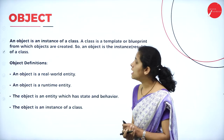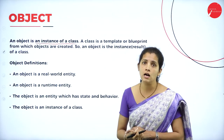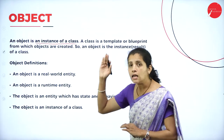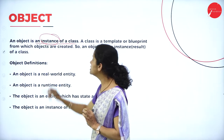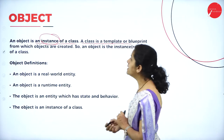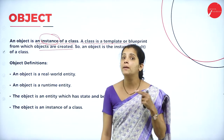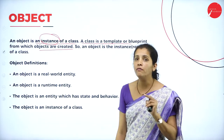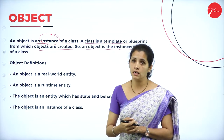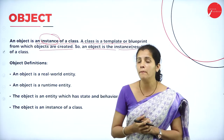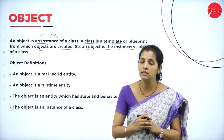An object is nothing but an instance of a class. Without a class, we cannot create an instance. An instance is nothing but the object. A class is a template or blueprint from which we create objects. With the help of a class, I can create objects. If I want to access any field or member present in the class, I need an object.